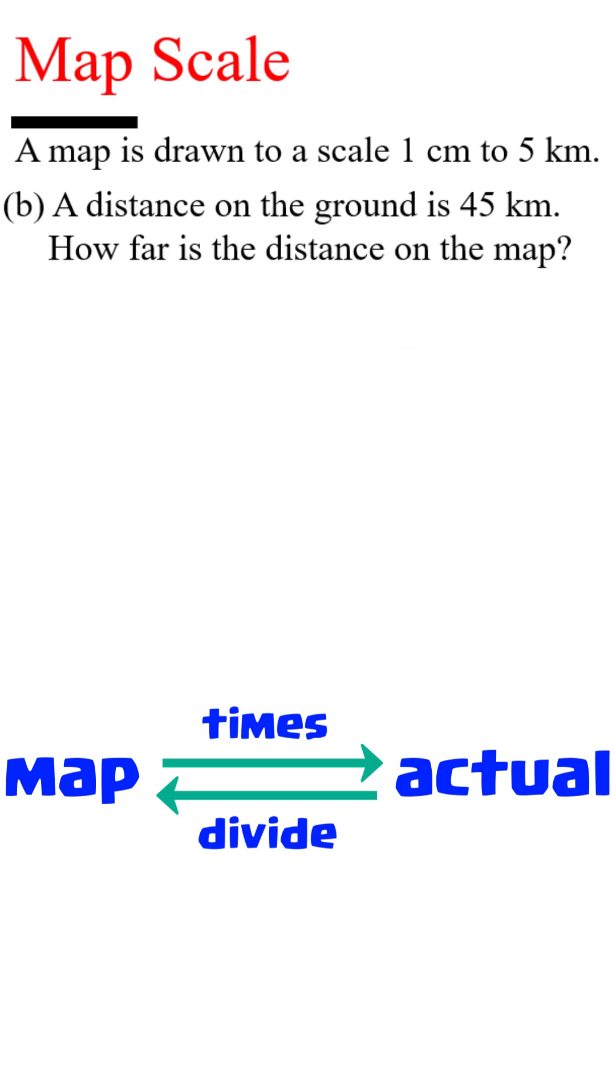For B, it is actual to map. Large to small means divide. 45km divided by 5 will give us 9cm.